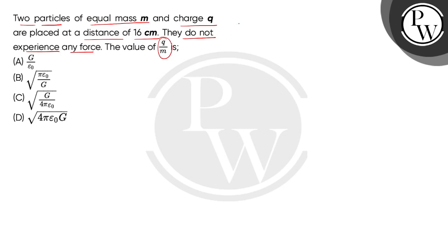Given in the question here, two particles. Each particle mass is M. Both particles have equal masses, and each is carrying charge Q. They are placed at a distance of 16 cm.